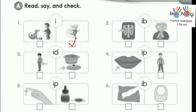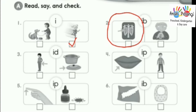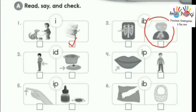Number 2. E. I. Which picture has sound E? Sip, rib — rib has sound. Give a check.